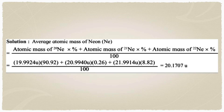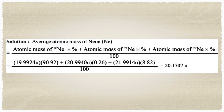The formula for average atomic mass is: the sum of (atomic mass of each isotope × percentage natural abundance) divided by 100. For example, the first isotope neon-20 gives 19.9924 × 90.92. Similarly calculate for neon-21 and neon-22. After substituting all values, the final answer for the average atomic mass of neon is 20.1707 U.